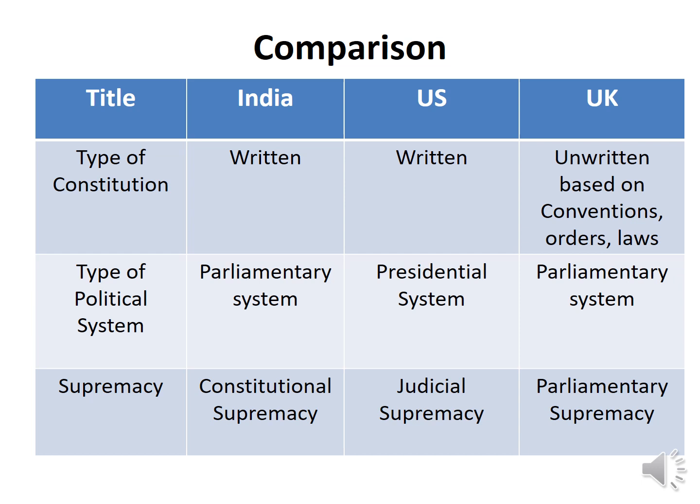The UK Constitution is unwritten — based on conventions, common law, judicial doctrines, judicial decisions, historical documents, and statutes. The Indian and US Constitutions, by contrast, are properly written documents. This is one fundamental difference between the three constitutions.